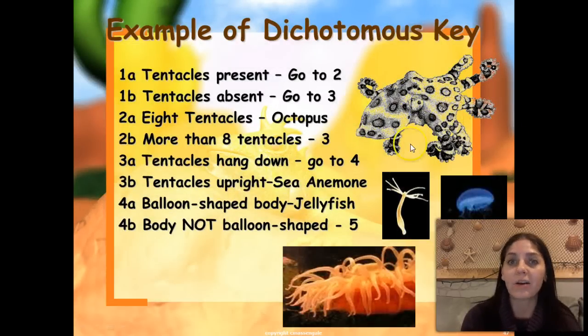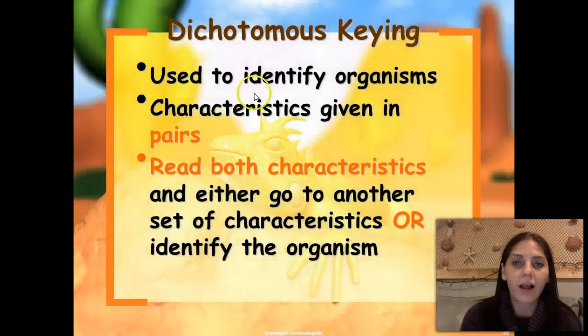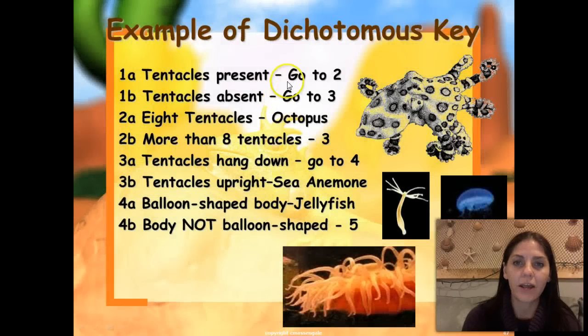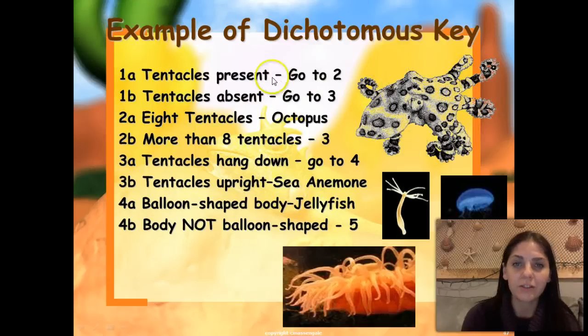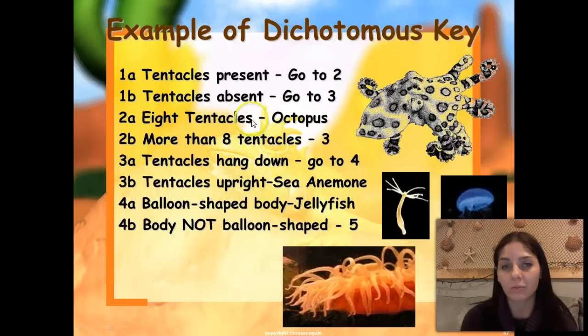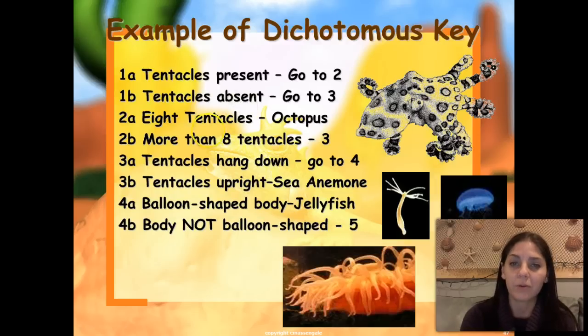You read both characteristics and either go to another set of characteristics or you can identify the organism. For example, to key out this octopus: go to 1a — 'tentacles present' — yes, tentacles are present, so go to 2a — 'eight tentacles' — it's an octopus. If it had more than eight tentacles, you'd go to three, but since it has eight, it's an octopus. This concludes our taxonomy lecture — I hope you learned a lot and I will see you guys soon!